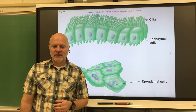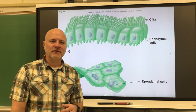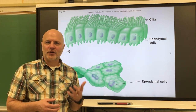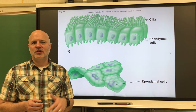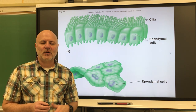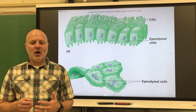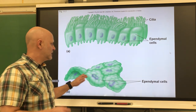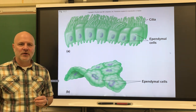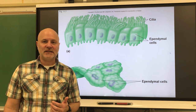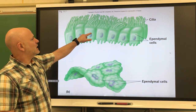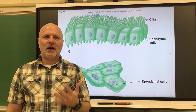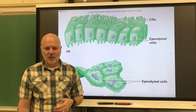Next are ependymal cells — cells that line cavities in the central nervous system. We have four cavities within our brain called ventricles, and a tube that goes down the middle of our spinal cord called the central canal, all lined by ependymal cells. Ependymal cells produce cerebrospinal fluid, or CSF, and they have cilia to move that CSF throughout and around our brain and spinal cord.